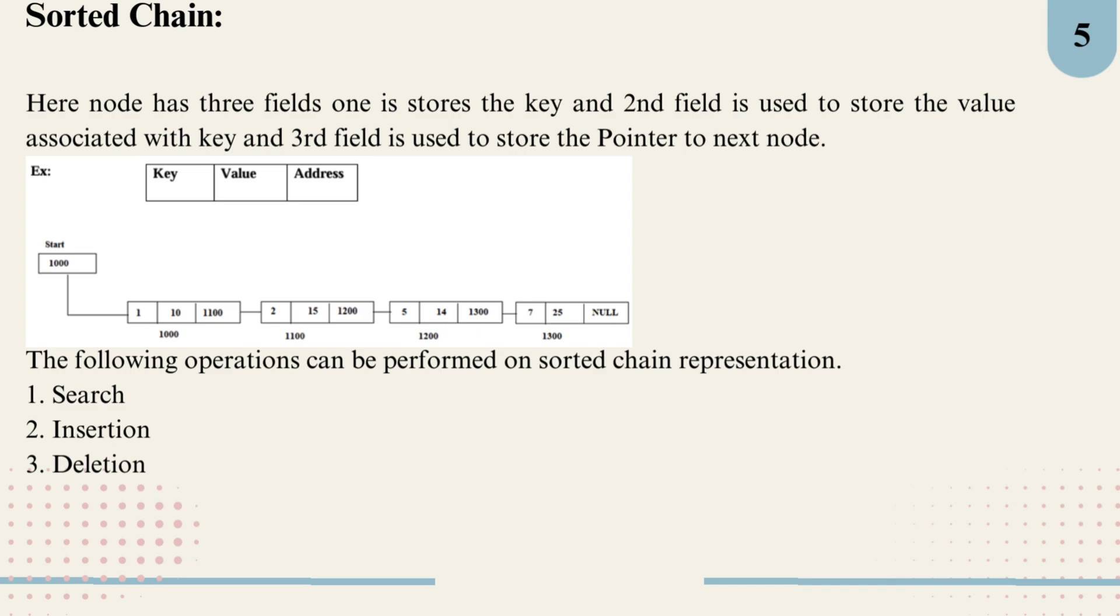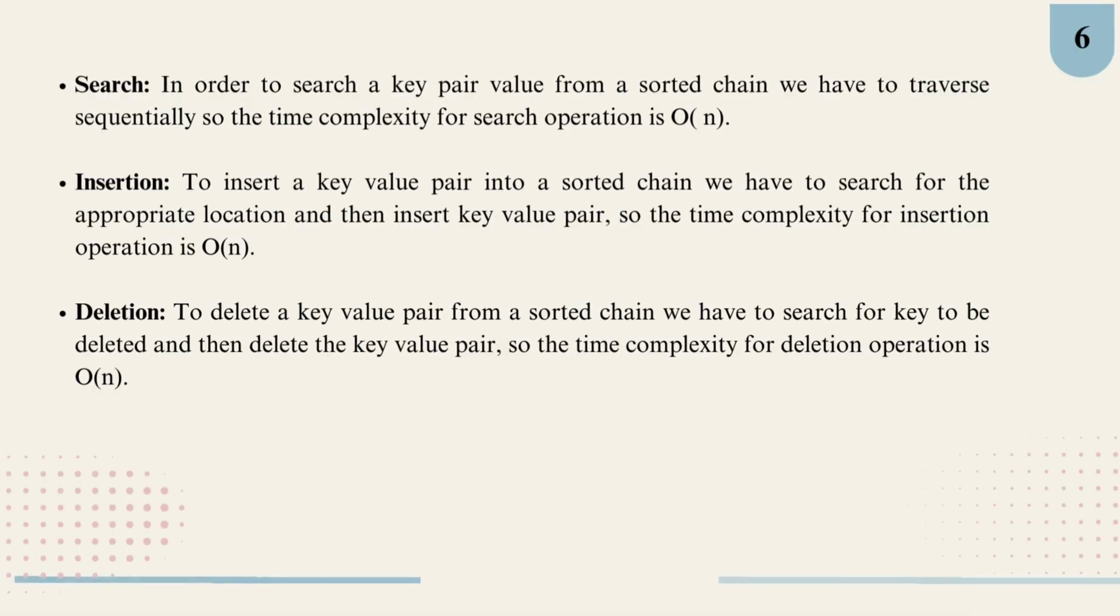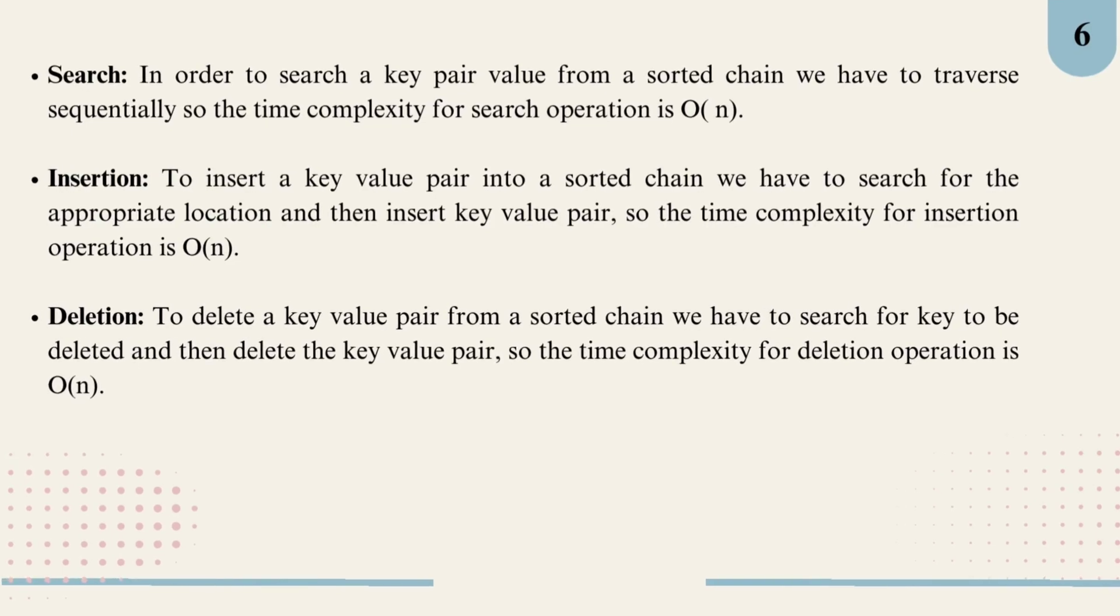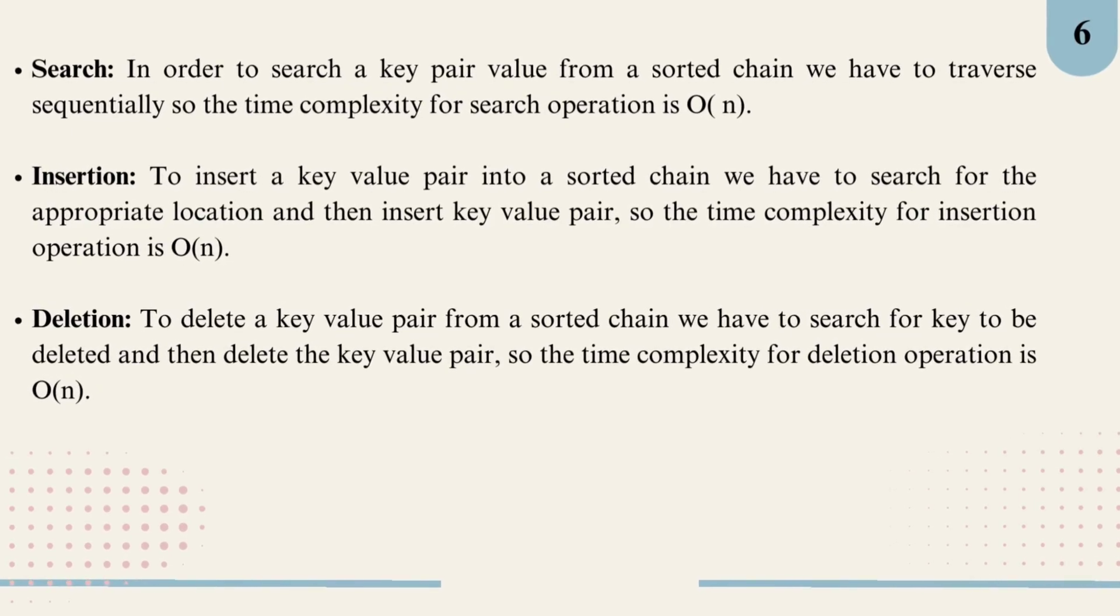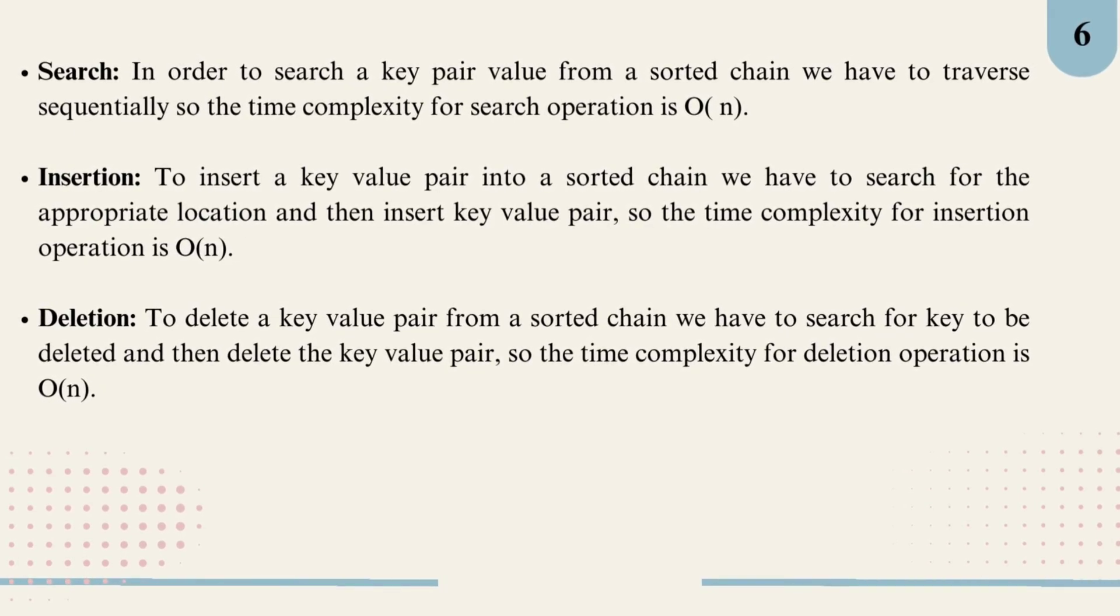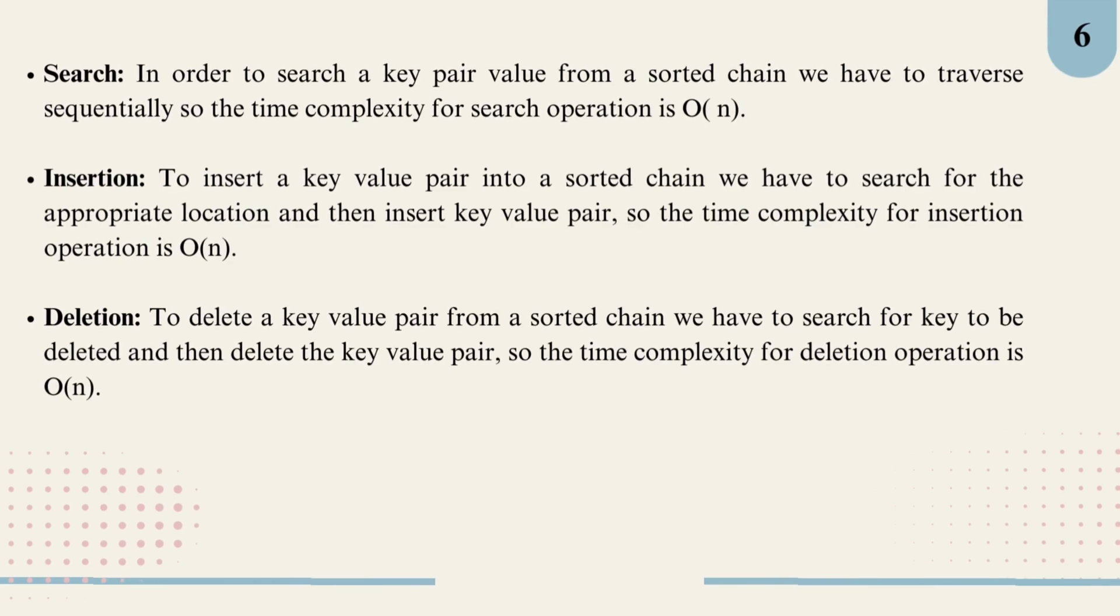Let's break down how the main operations work in sorted chain representation for a dictionary. First search: to find a key-value pair we need to traverse the linked list sequentially, going from node to node until we find the key. This makes the search operation slower, with a time complexity of O(n).